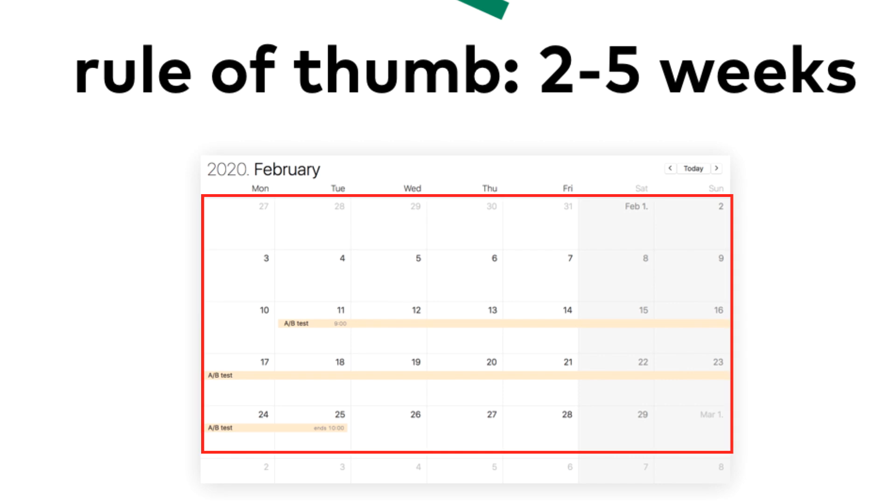And why the maximum of 5 weeks? If your experiment has to run for more than 5 weeks because of the small sample size you have, that's just way too slow. Online businesses have to be faster than that.